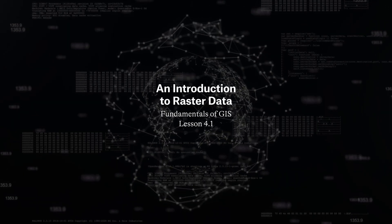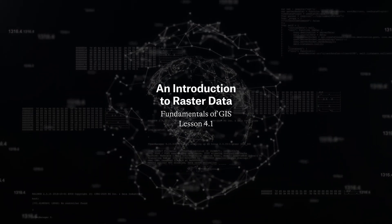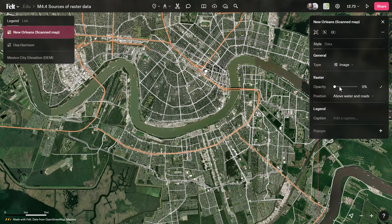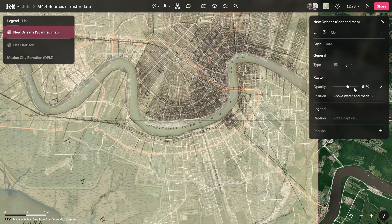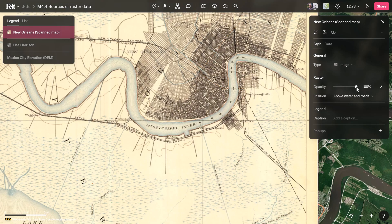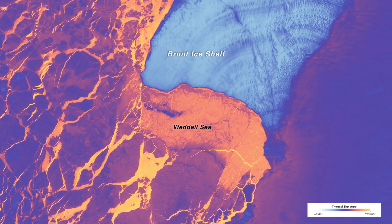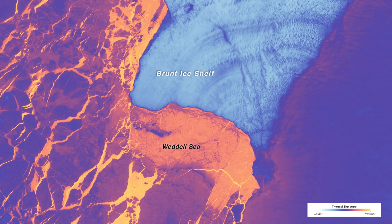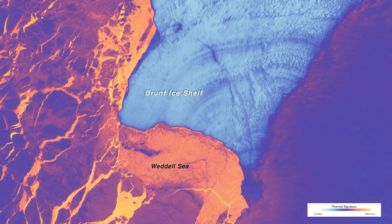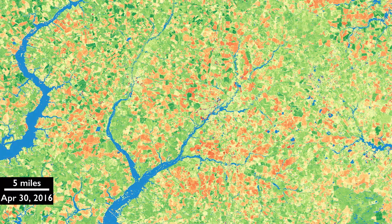Raster data, key to GIS, comes from diverse sources like aircraft, drones, satellites, sensors, digital pictures, and scanned maps. These can be acquired through computer processing, camera imaging, or sensor technology.